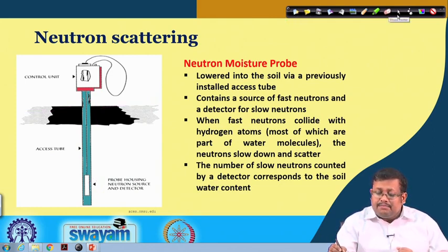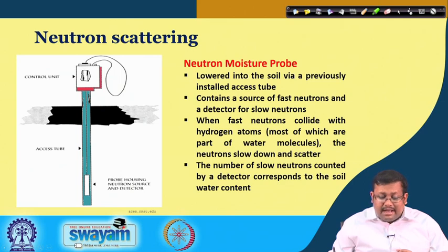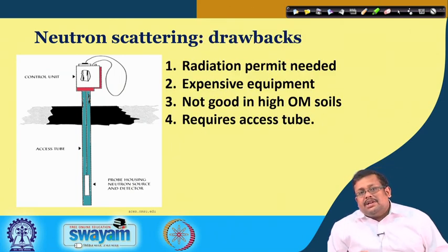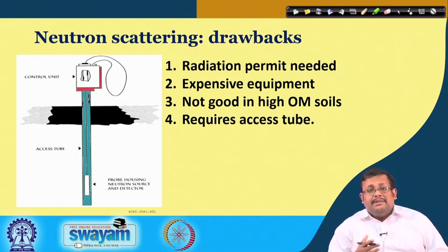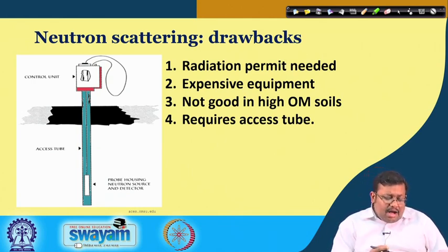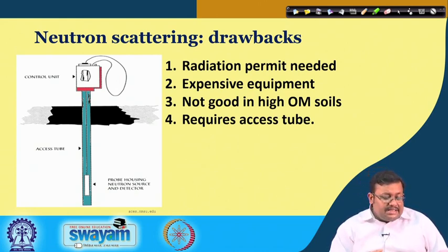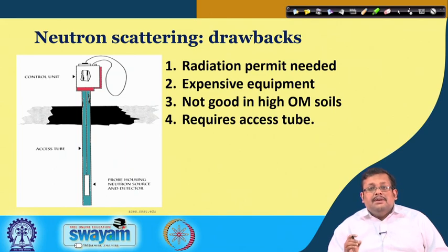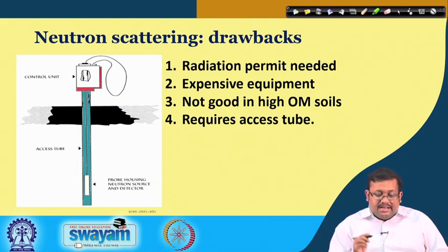This is a very efficient method, but it has some drawbacks. First, for operating a neutron moisture probe you need a radiation permit. Second, it is a very expensive instrument. Third, it cannot be used in high organic matter rich soil. Finally, it requires a pre-installed access tube. The probe housing contains the neutron generators and detectors, but the access tube must be installed beforehand.